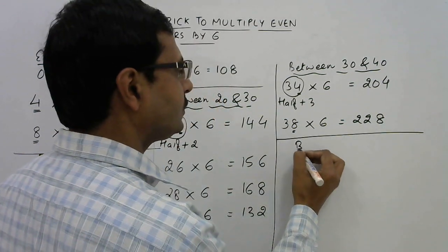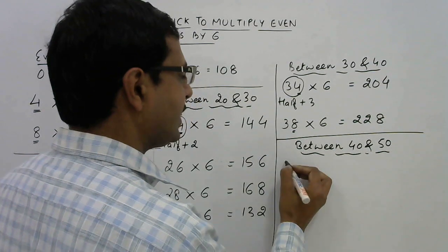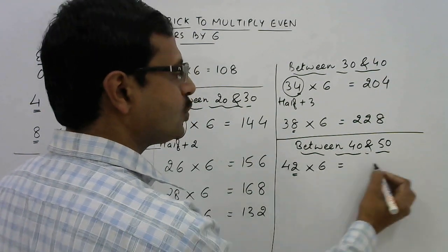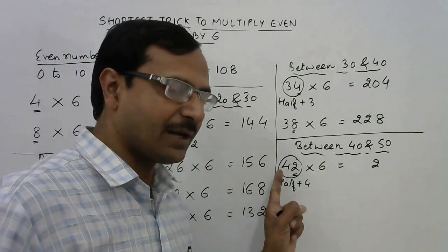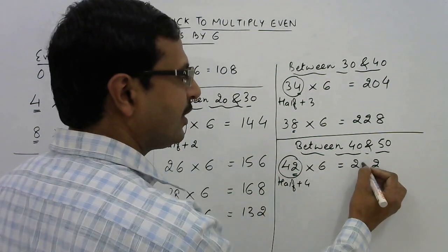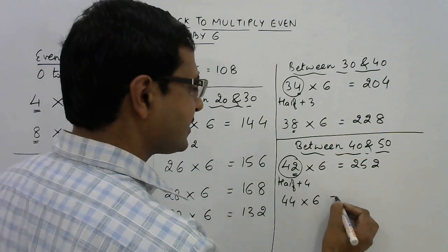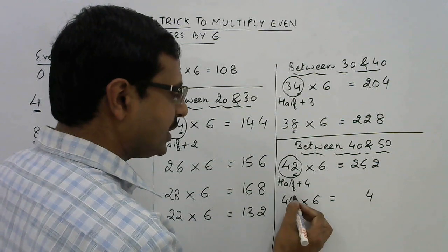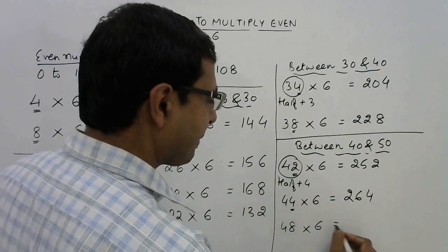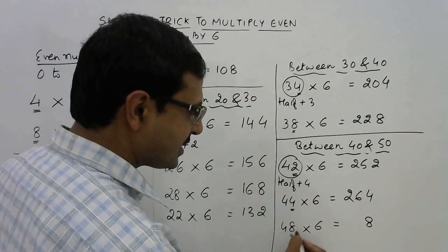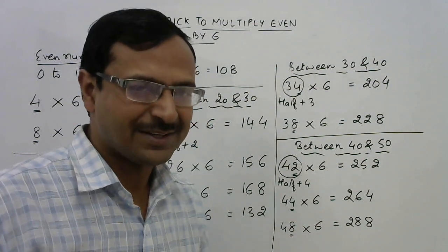Let's move on to numbers between 40 and 50. Take 42 into 6: it ends with 2. Half and add 4, because the number starts with 4. So 21 plus 4 is 25. 252 is the product of 42 and 6. Take 44 into 6: ending with 4. Half is 22, plus 4 is 26. 264 is the product. 48 into 6: ending with 8. Half of 48 is 24, plus 4 is 28. So 288 is the product.